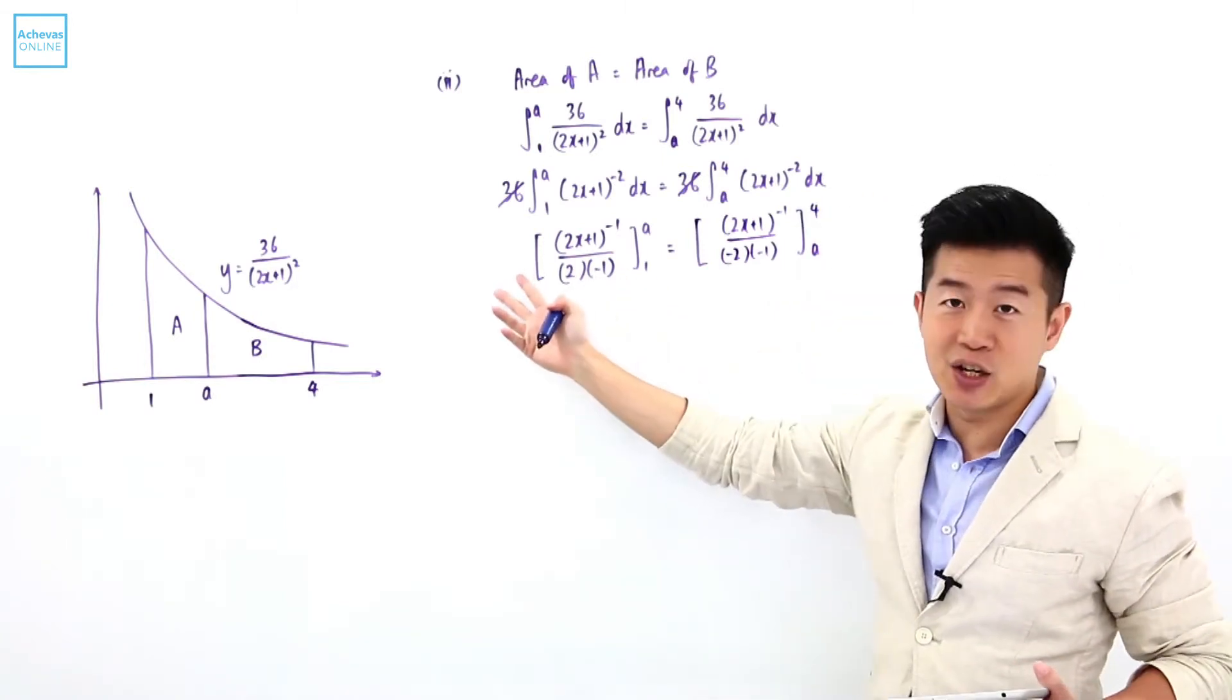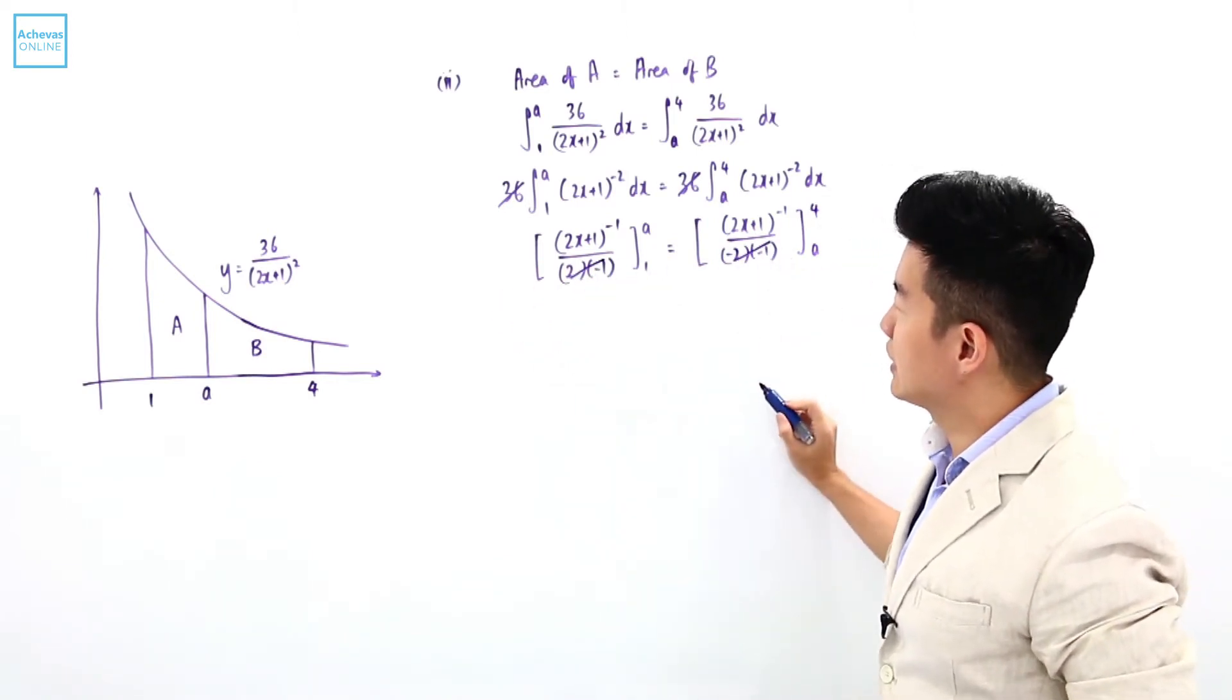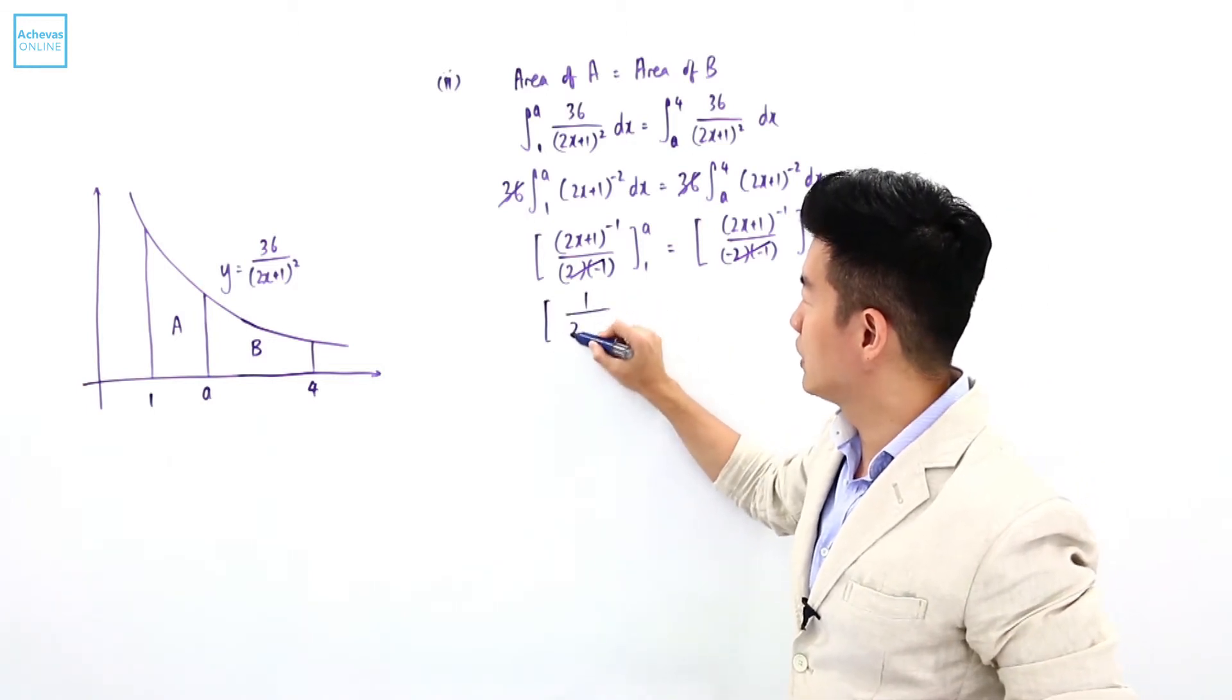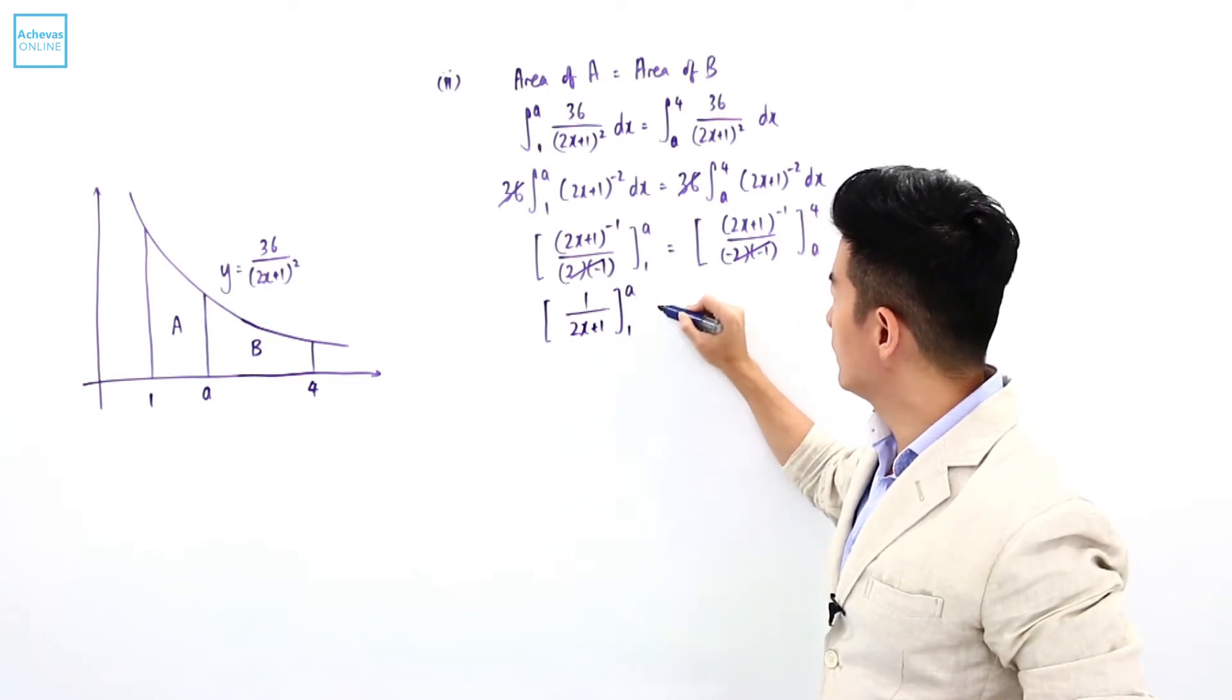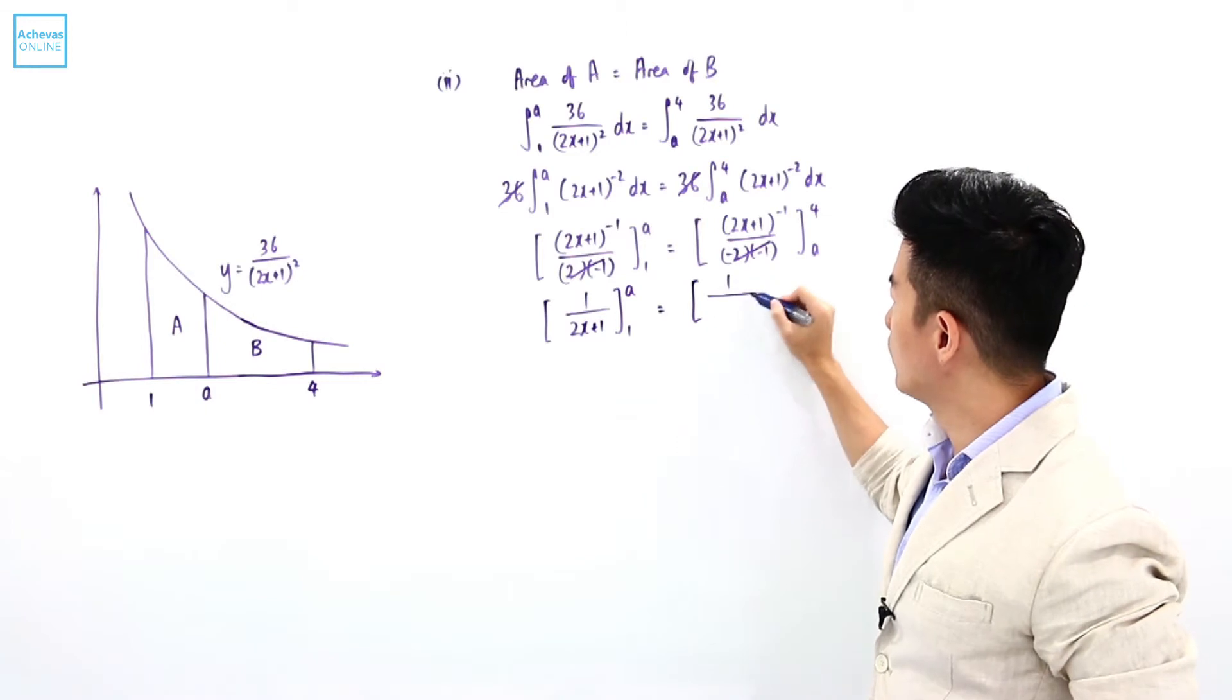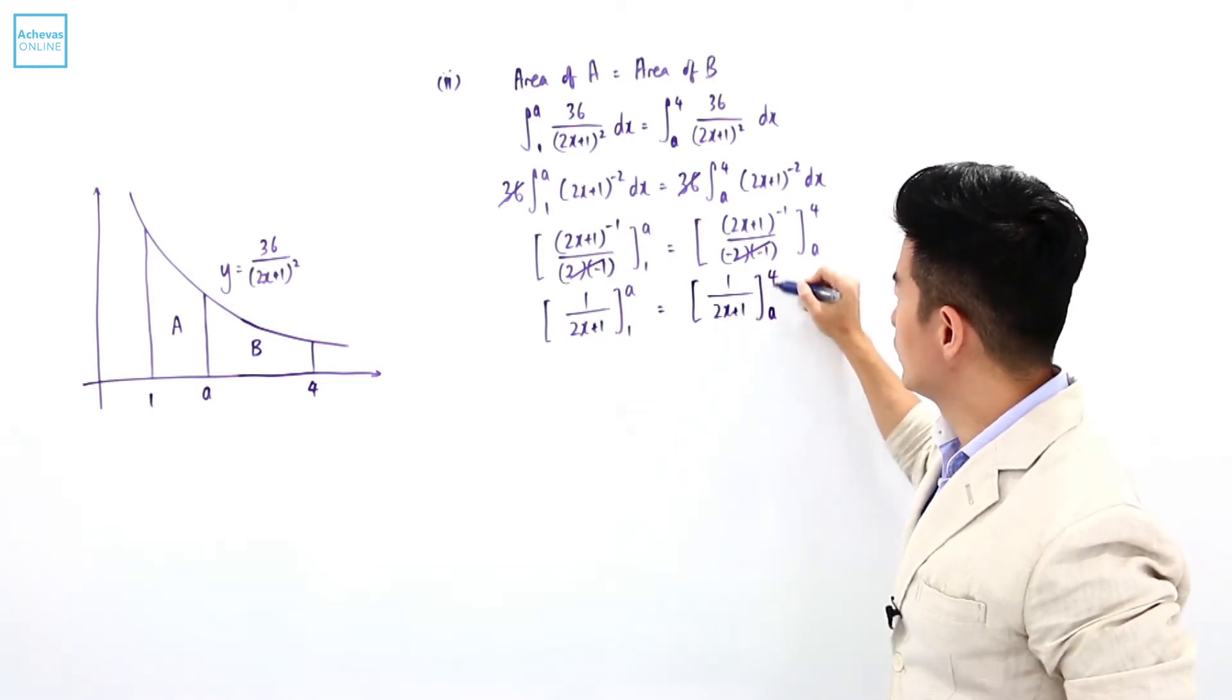I can take this out of the bracket and cancel it on the left-hand side and right-hand side. So what I'm left with is 1/(2x + 1) from 1 to A equals 1/(2x + 1) from A to 4.